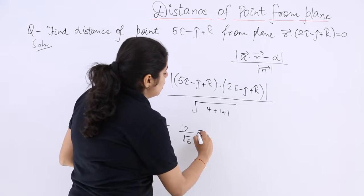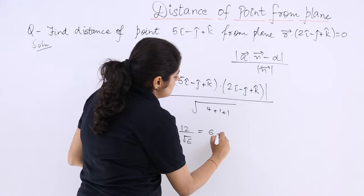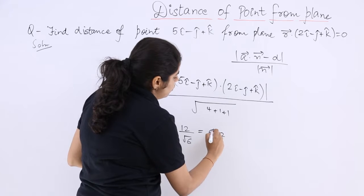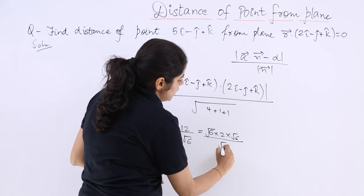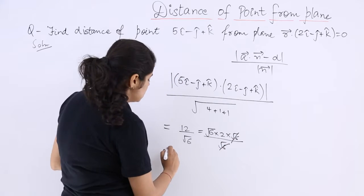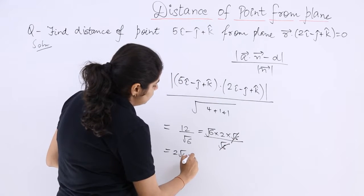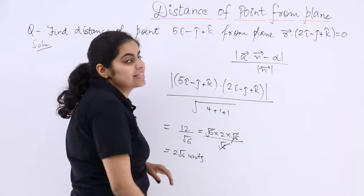So either you can leave it here or what you can do is it is 6 into 2. 6 is root 6 into root 6 upon root 6. So let's cancel this. So we get 2 under root 6 units as the answer.